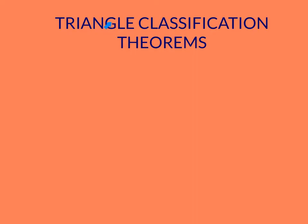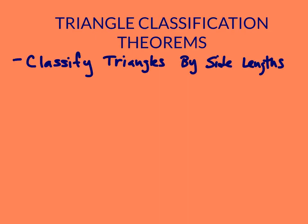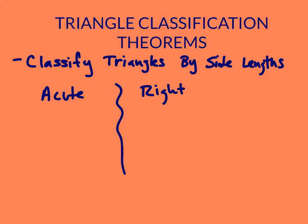Hi there. This is a video about triangle classification theorems. What we're going to do in this video is classify triangles by their side lengths. We're going to look at three options: acute triangles, right triangles, and obtuse triangles.